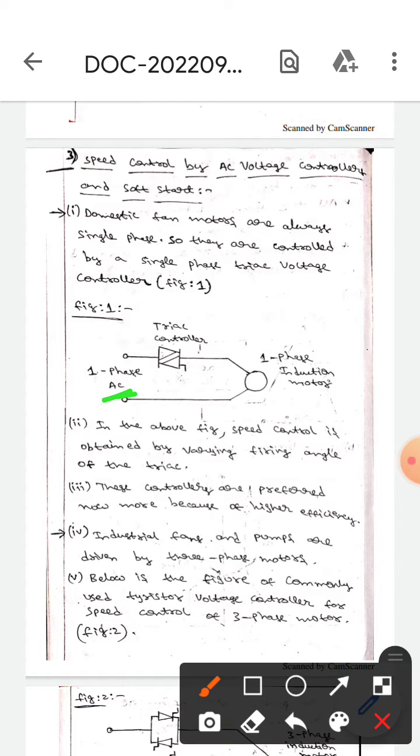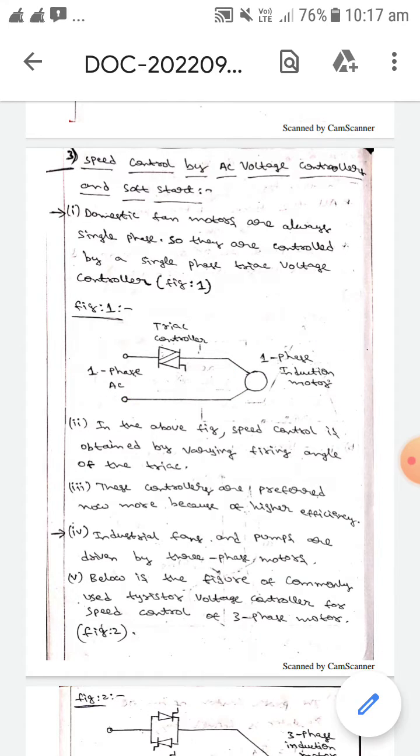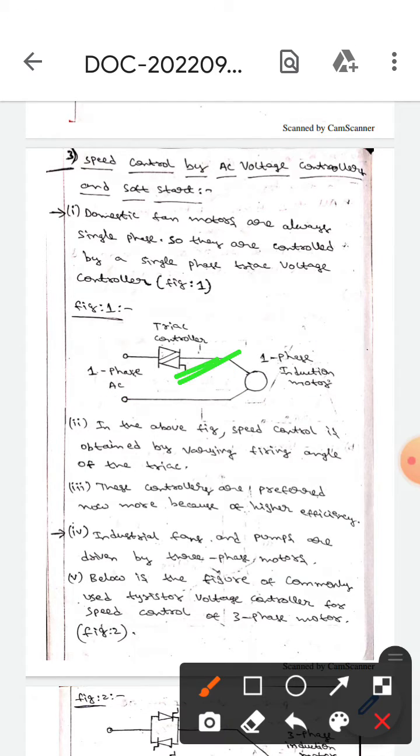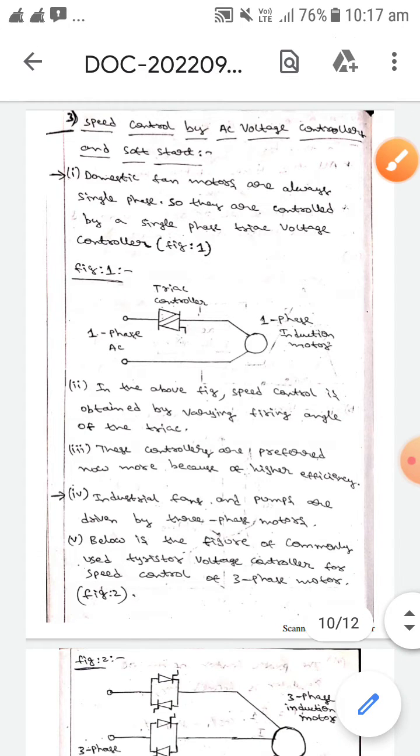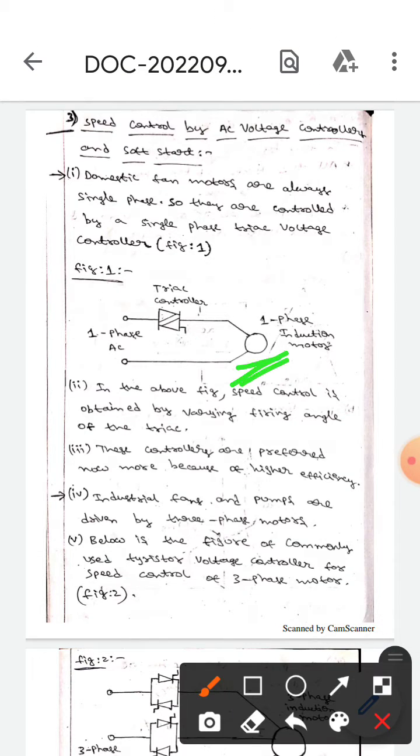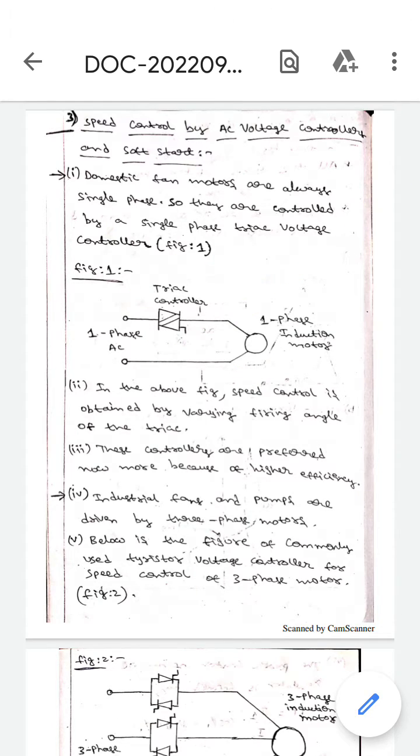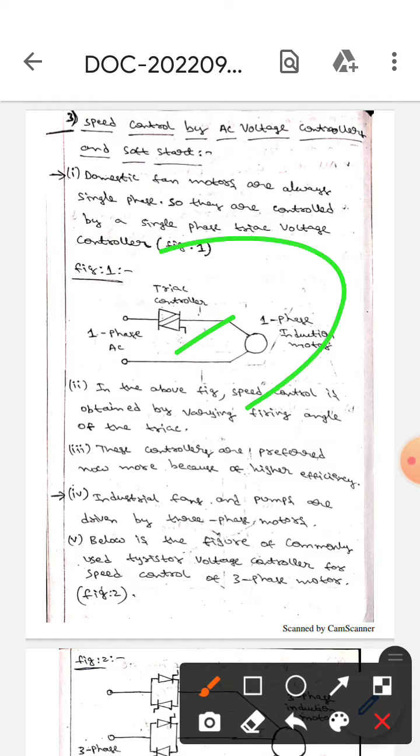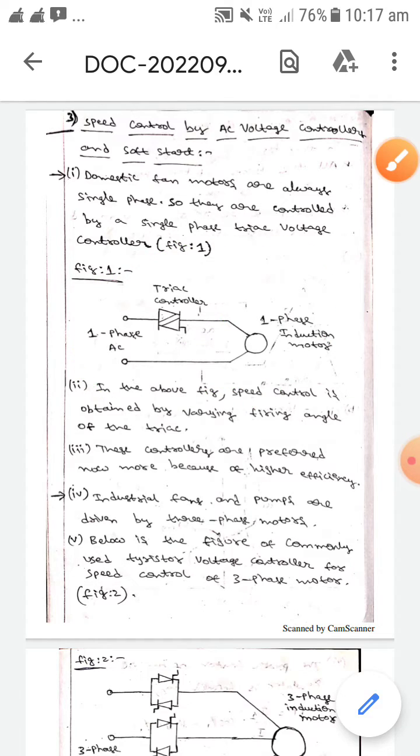This is the one phase AC, this is the one phase induction motor, and this is the triac controller. In the above figure, speed control is obtained by varying the firing angle of this triac. These controllers are preferred nowadays because they have higher efficiency.